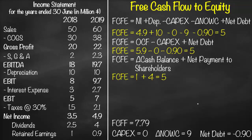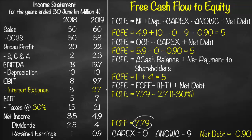We previously calculated free cash flow to firm as 7.79, so we can also derive FCFE from FCFF. The formula is: FCFE equals FCFF minus interest multiplied by (1 minus tax rate) plus net debt. That gives us 7.79 minus 2.7 multiplied by (1 minus 30%) plus net debt of negative 0.9, which again equals 5. In this example, all four formulas for free cash flow to equity yield exactly the same result.